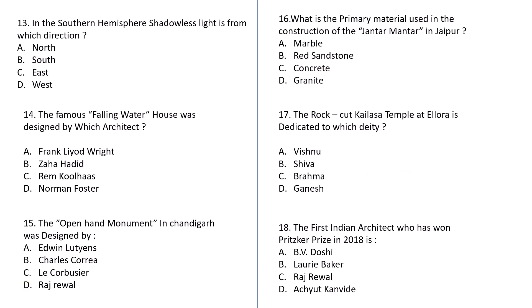Question number 13: In the southern hemisphere, shadowless light comes from which direction? A: North, B: South, C: East, D: West. The correct answer for this is A — North.